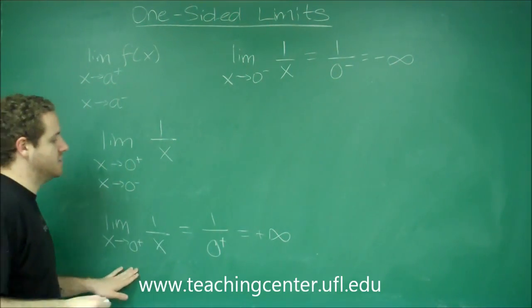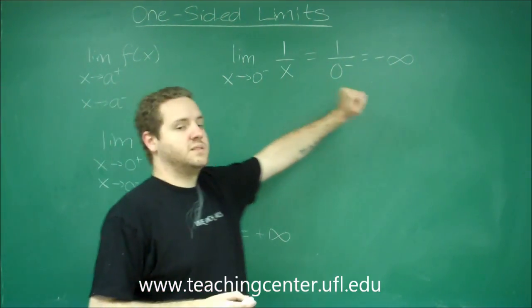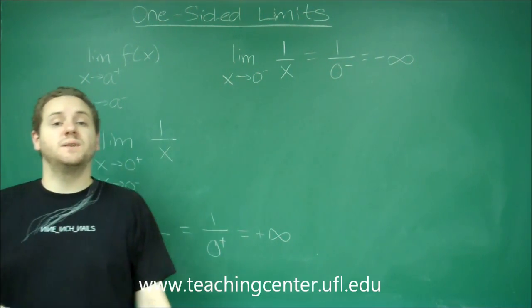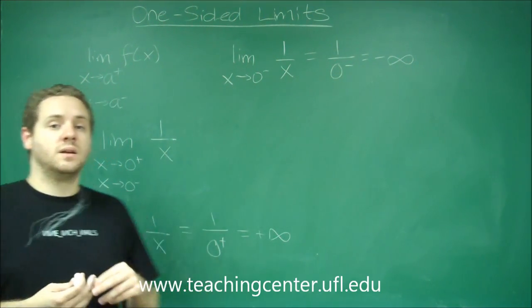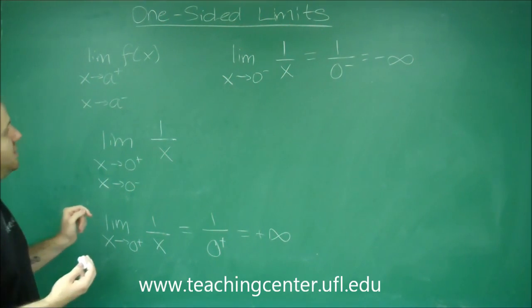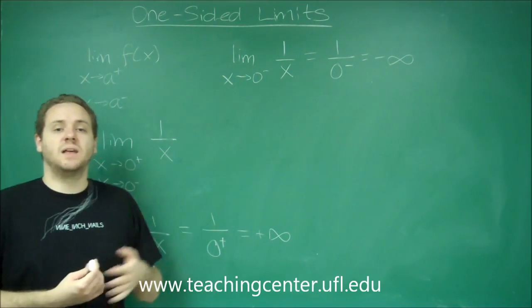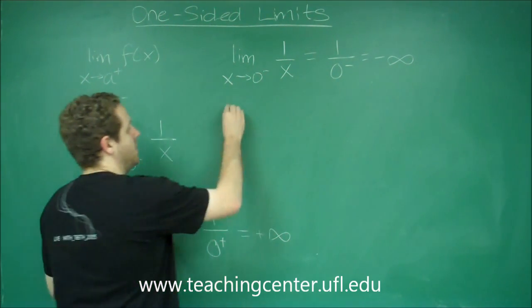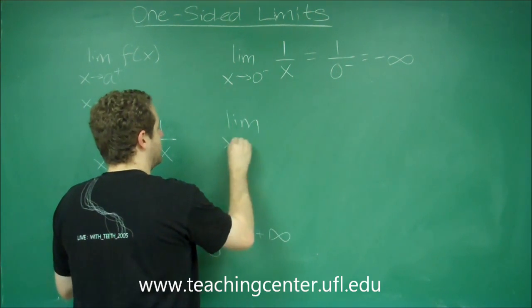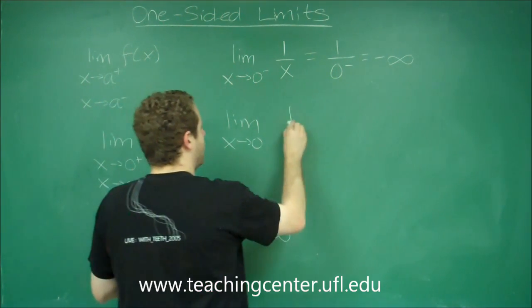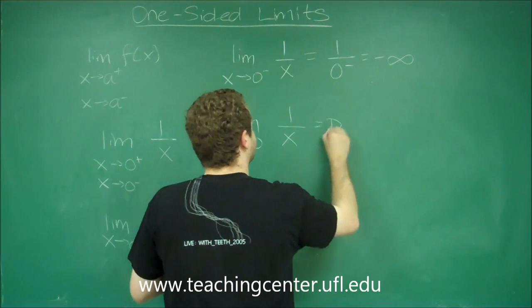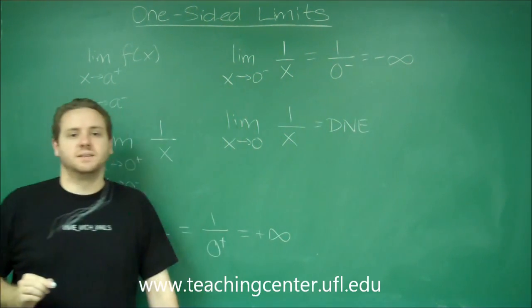So zero from the right gives us positive infinity, but zero from the left gives us negative infinity. If the one-sided limits are different, then the limit as x approaches that number itself, so just the limit as x approaches 0 of 1 over x, does not exist.